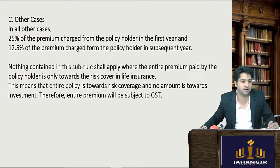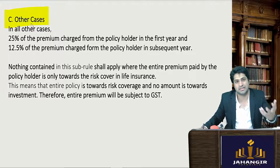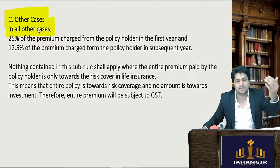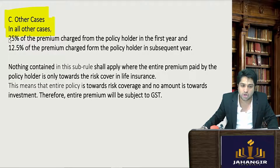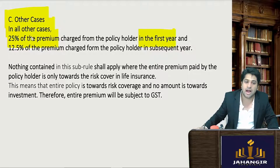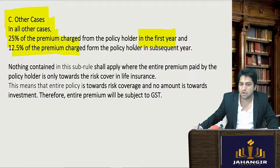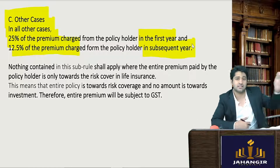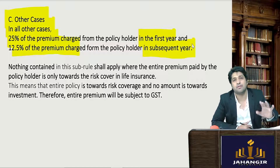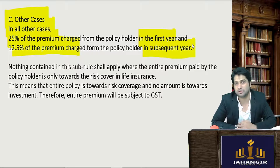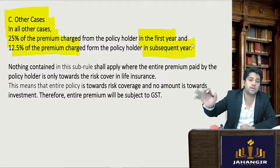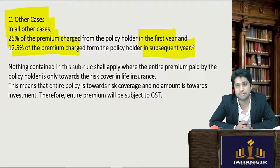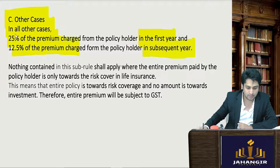In any other case other than the above two, 25 percent of the premium charged will be the value of supply in the first year, and 12.5 percent of the premium charged from the policyholder will be the value of supply in subsequent years. For example, if you are paying regular premiums other than category one or two, then for the first year 25 percent is considered to be the value of supply, and from the next year only 12.5 percent of the premium is considered the value of supply.